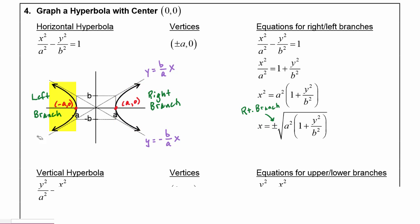Looking at the left branch on the graph, all of the x-coordinates are negative — the y-coordinates are sometimes positive and sometimes negative, but all x-coordinates are negative. So when we take the negative square root, that gives us the left branch equation.